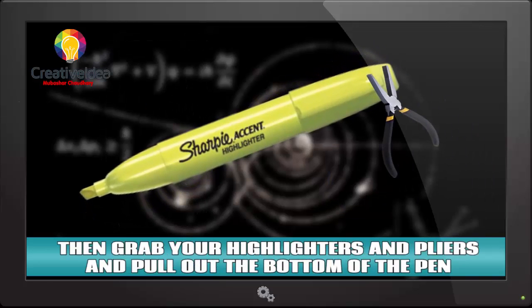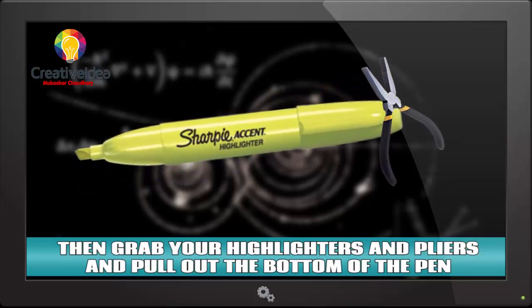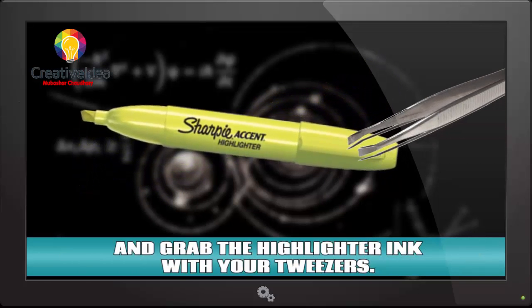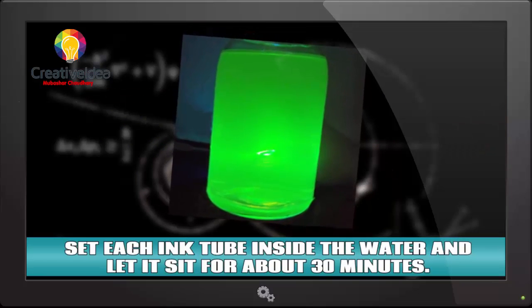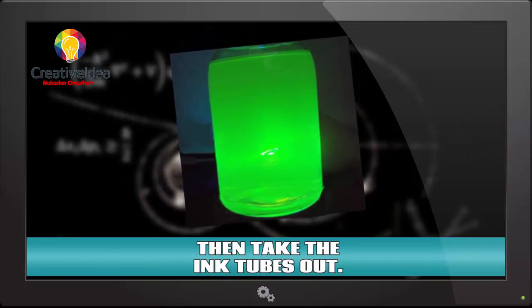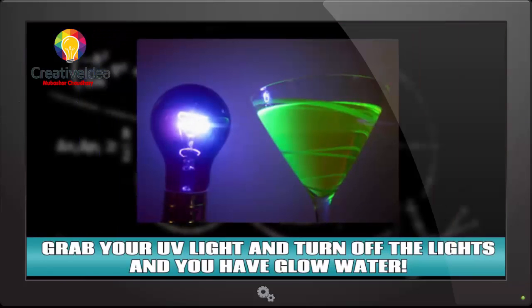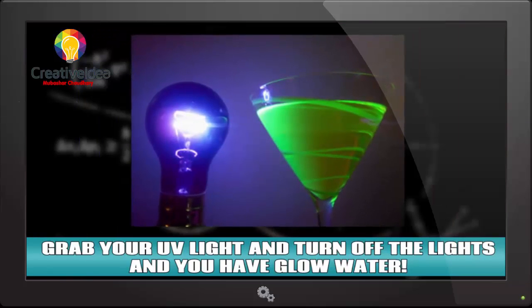Then grab your highlighters and pliers and pull out the bottom of the pen and grab the highlighter ink with your tweezers. Set each ink tube inside the water and let it sit for about 30 minutes. Then take the ink tubes out. Grab your UV light and turn off the lights, and you have glow water.